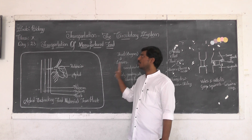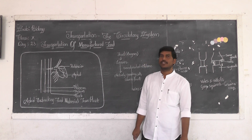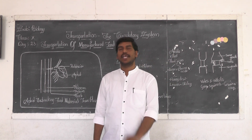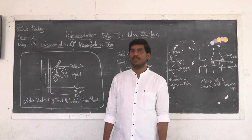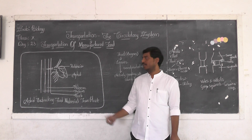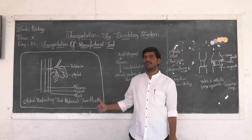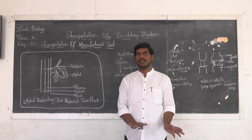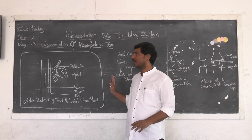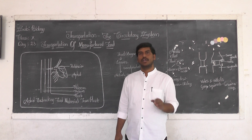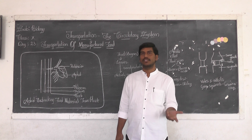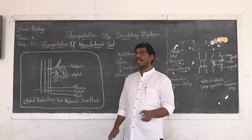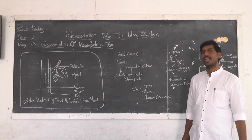This is about today's class on transportation of manufactured food. For today's home assignment, write briefly about how phloem helps in transportation of manufactured food material. We have finished the third unit today, so revise the first, second, and third units. For any worries, you can interact with us in the synchronizer session. I give you two minutes to copy the things in your book. Thank you and have a nice day.